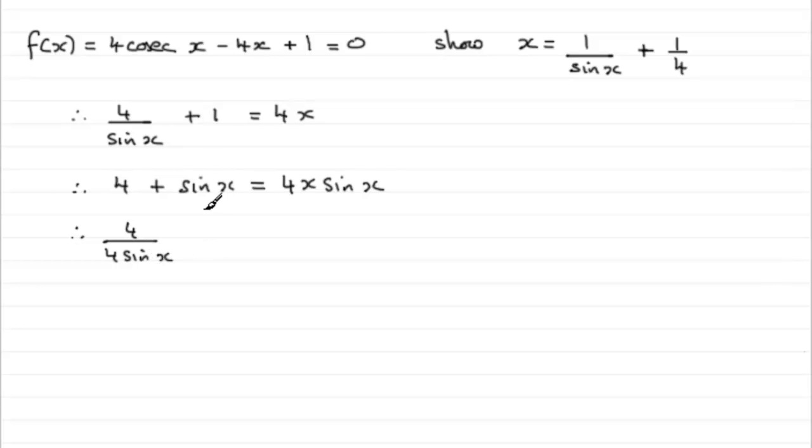and then we've got the sin x here, and that's going to be divided by 4 sin x. And lastly, if we divide 4x sin x by 4 sin x, it's just going to give us x.